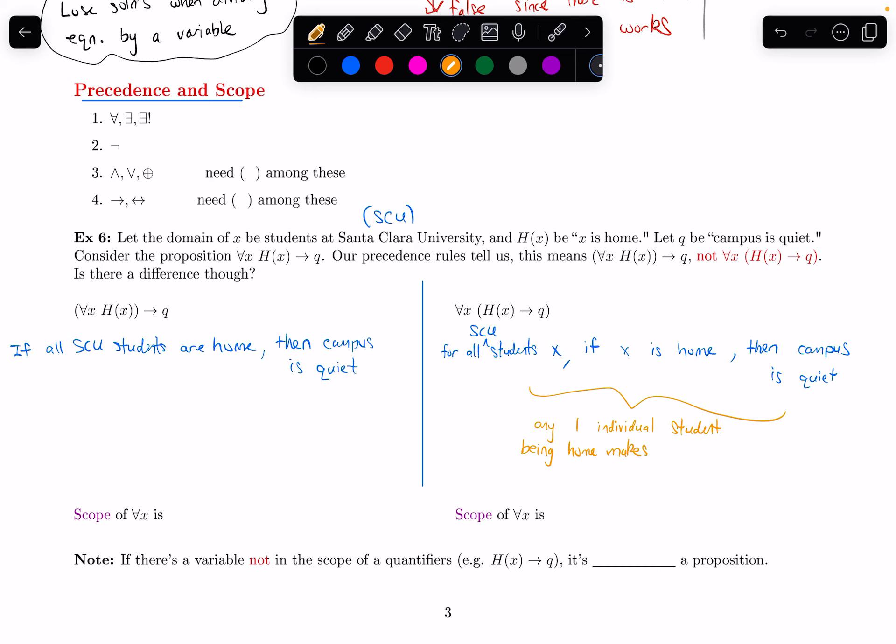And that's quite different from what the first statement is saying. The first statement is saying we need all SCU students to be home, and then the rule says campus is quiet. So these are definitely different as a result. There's definitely a difference in terms of what they mean.